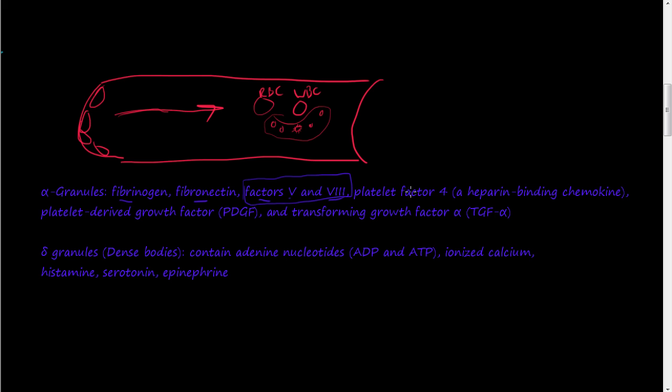Then they have the platelet factor 4, which is a heparin binding chemokine. They have platelet-derived growth factor, which helps in the reestablishment or these cells in extracellular matrix to proliferate. And we've talked about that in previous videos. And they have the transforming growth factor alpha, which also helps in the growth or the rebuilding of damaged tissue.